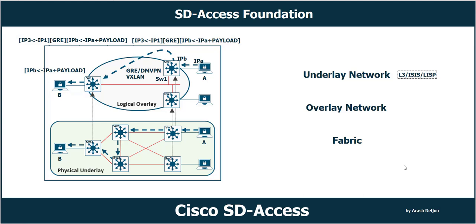In most cases we use IS-IS or OSPF. Another technology used in the underlay is LISP, which I will explain later. In the overlay network we use VXLAN for tunneling. VXLAN has many benefits — perhaps the most important is increasing the number of VLANs. In traditional switching networks we have only 4096 VLAN numbers, but VXLAN supports many more. Also, VXLAN allows encapsulating Layer 2 frames, so you can extend Layer 2 networks across the overlay.